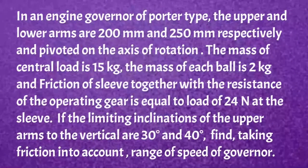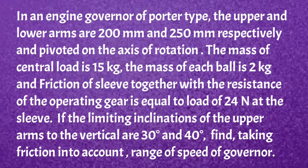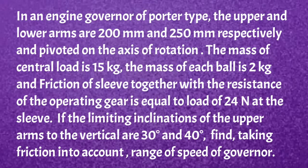Now first I will read what is the given problem. In an engine governor of Porter type, the upper and lower arms are 200 mm and 250 mm respectively and pivoted on the axis of rotation. The mass of the central load is 15 kg. The mass of each ball is 2 kg and friction of the sleeve together with resistance of operating gear is equal to a load of 24 N at the sleeve. If the limiting inclination of the upper arms to the vertical are 30 degrees and 40 degrees, find taking friction into account the range of speed of the governor.